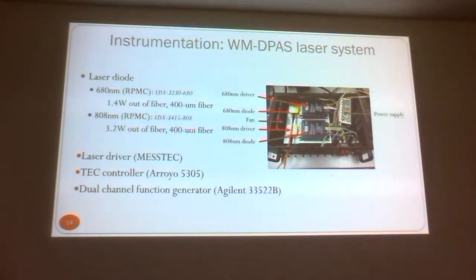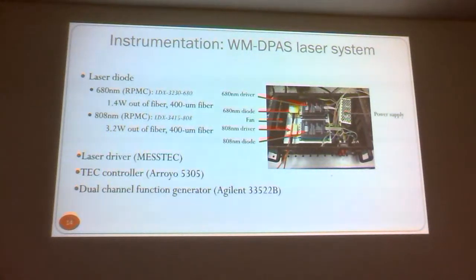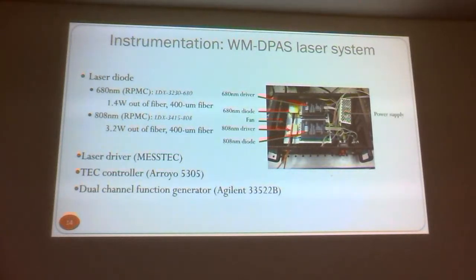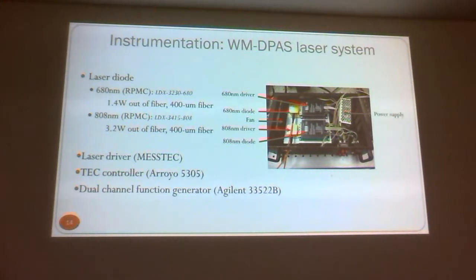The instrumentation is relatively straightforward — two laser diodes at 680 and 808 nm. The most important part is the drivers, which have to be very accurate to get 0.05-degree phase resolution. There are two companies in the world that can make those kinds of drivers — one in Germany and one in California. The key is to operate in the megahertz range with a peak power of about 10 watts.